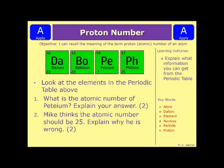And number two is: Mike thinks that the atomic number should be 25 — explain why he is wrong. Now, first thing to note here is this is in order of a periodic table, so it goes up in order from one to the next. You should be able to use that to easily figure out what the atomic number is, and then think about the rest of the video and how that explains why it can't be anything else. Pause the video, have a go at it, and we'll see how you've done in a minute.